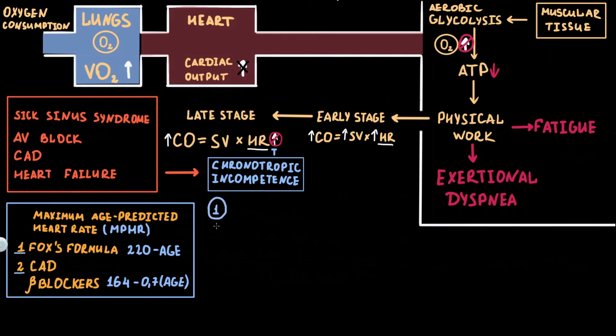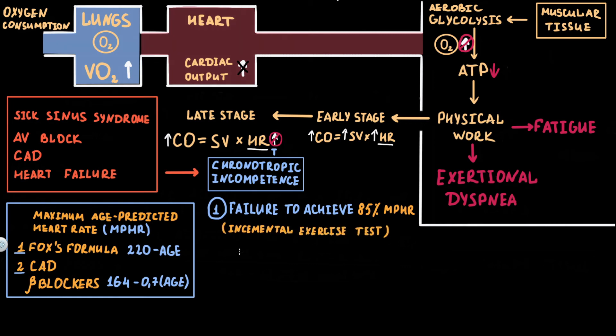For diagnosis of chronotropic incompetence, one of the following criteria must be met. The first is failure to reach 85% of maximum age-predicted heart rate during an incremental dynamic exercise test. We calculate the maximum age-predicted heart rate, perform the exercise test, and compare the results. During physical exertion, the patient should achieve at least 85% of maximal age-predicted heart rate to exclude chronotropic incompetence.